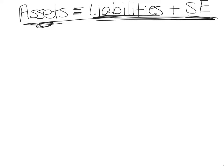If someone invested cash — or any other asset like land, a building, or equipment — in exchange for common stock, which proves ownership in the company, then assets would go up. Cash specifically increases, and stockholders' equity goes up because you're issuing common stock. Common stock falls under stockholders' equity, so you check asset increase and stockholders' equity increase.